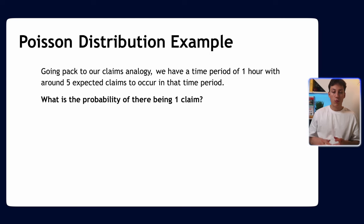Let's go through an example of the Poisson distribution. It tells you if something happens at a mean rate, what's the probability of getting this many counts. Going back to our claims analogy, we have a time period of one hour and we expect around five claims per hour. So what is the probability of there only being one claim?